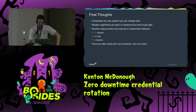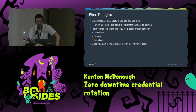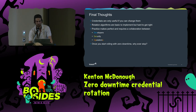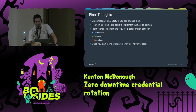Final thoughts: credentials are only useful if you can change them. Rotation algorithms are basic to implement but really hard to get right because of corner cases — what if the network is down, how long do you retry, under what conditions. Practice makes perfect, and it requires collaboration between developers, security, and operations — DevSecOps. Doing this can turn a DevOps team into a DevSecOps team: make them care about credentials. And once you gain confidence rotating with zero downtime, don't stop. If you can rotate weekly instead of every 90 days, do it weekly. Fight the maintenance window culture — do it during business hours so you're already at your desk if something goes wrong.